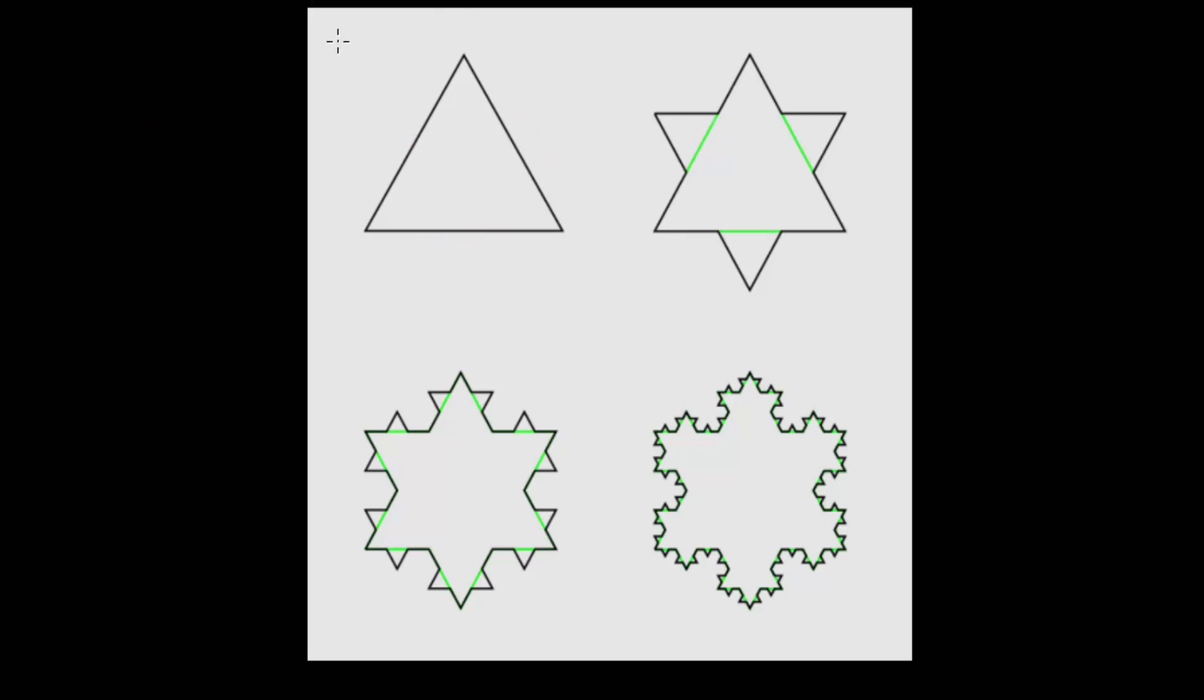We can call this step 0, the starting point, and this will be step 1 after each of the original sides was split into three, and an equilateral triangle was put in the center for each of these original sides.